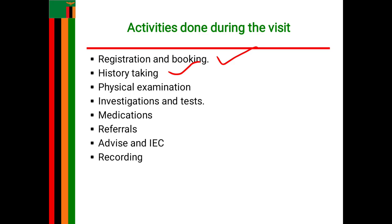Those are some of the details recorded under social history. The other type of history to collect is environmental history. Here you find out about accommodation — the number of windows, whether there is good ventilation, the source of water, the type of toilets, waste disposal, the surrounding area, and the lighting system.